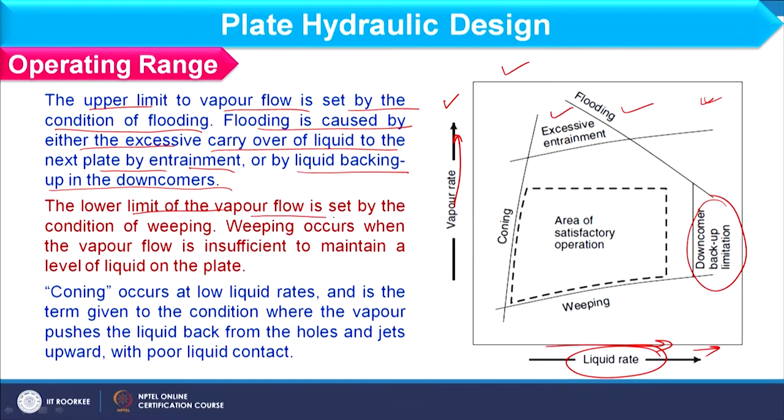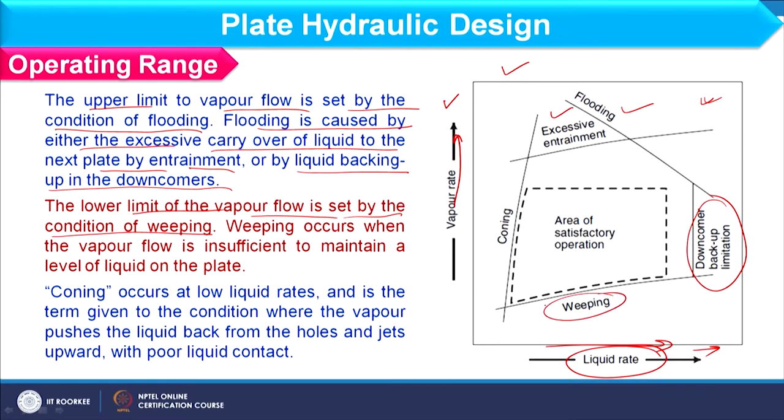The lower limit of the vapour flow rate is set by the condition of weeping. Weeping occurs when vapour is not able to hold the liquid over the plate. So in both ways, it is the vapour flow rate which decides the upper limit as well as the lower limit — upper limit to stop flooding, lower limit to stop weeping. When vapour cannot hold the liquid over the plate, liquid starts moving downward through the holes. This also occurs at lower vapour flow rates, while liquid flow rate varies from low to high. Both flooding and weeping are addressed by vapour flow rate only.